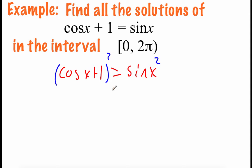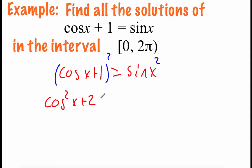With this first one, when we're squaring it, we do have to remember that it's a binomial times another binomial, so we would end up having to FOIL that out. When we do that, we get cosine squared of x plus 2 cosine of x plus 1. And the right-hand side, if we take sine and square it, we just get sine squared of x.